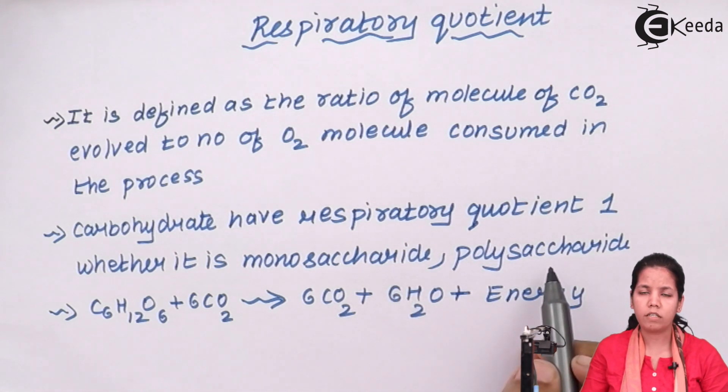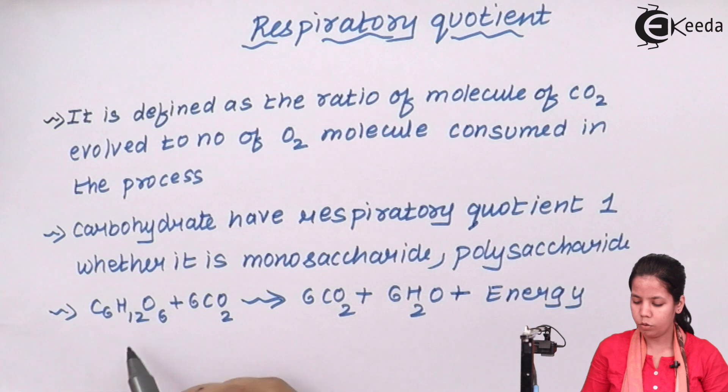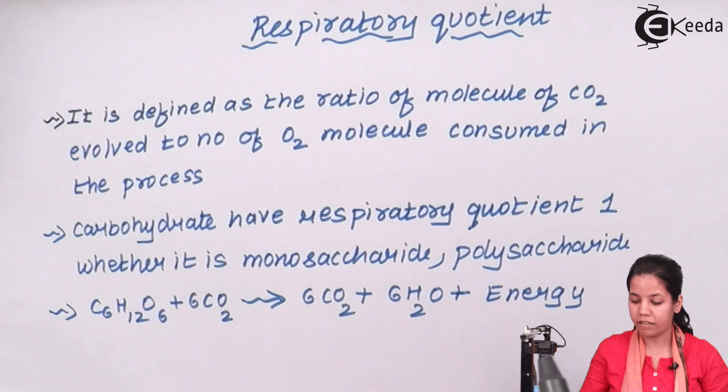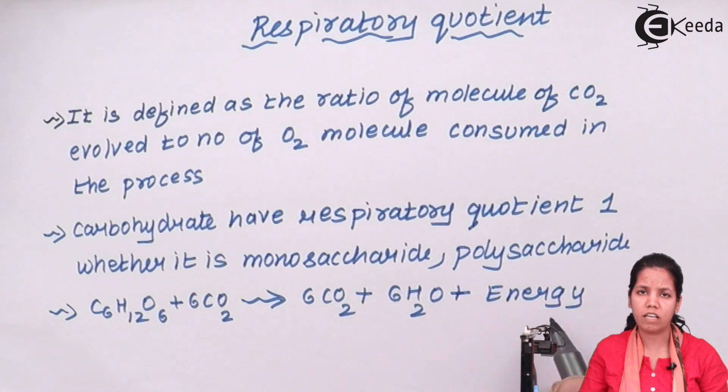or disaccharides - like sucrose, glucose, or other carbohydrates. As you can see in the equation, C6H12O6 plus 6O2 gives you 6CO2, 6H2O, and energy, and the respiratory quotient is calculated accordingly.